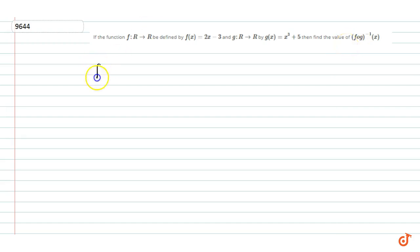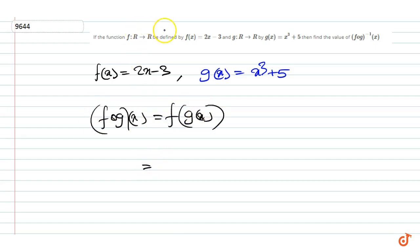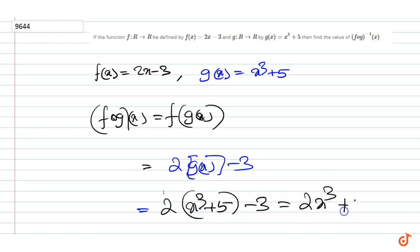Here we have f(x) = 2x - 3 and g(x) = x³ + 5. Then, f(g(x)) = f(g(x)) = 2g(x) - 3 = 2(x³ + 5) - 3 = 2x³ + 7.